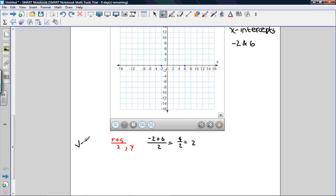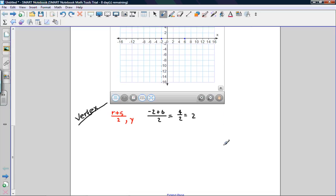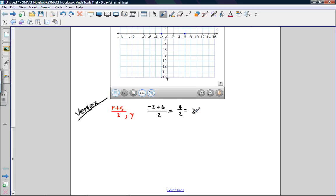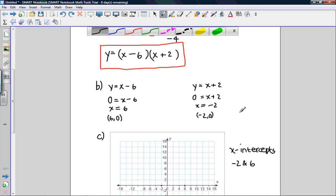Obviously, our vertex will be here. 2 is our x-coordinate. As for our y-coordinate, we have to plug that into the above equation: y equals (x minus 6)(x plus 2).